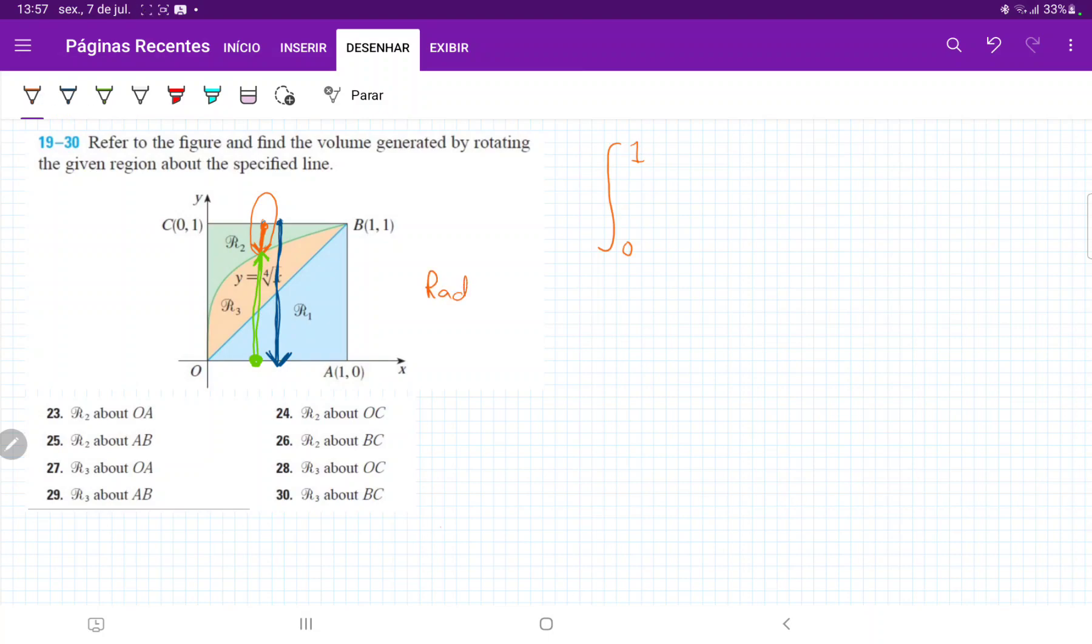So the radius is 1 minus the height of this curve. The height of this curve is whatever this function evaluates. It's 1 minus the fourth root of x. Actually, let me put it in terms of exponents because it's easier to square: 1 minus x to the one-fourth. This is the radius.